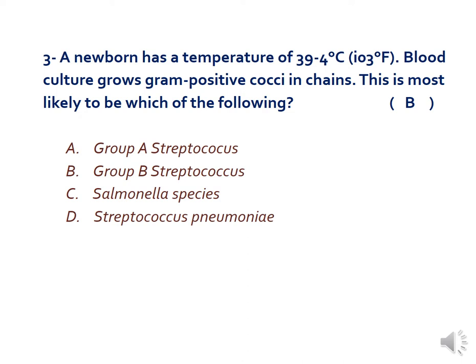A newborn has a temperature of 103 degrees Fahrenheit. Blood culture grows gram-positive cocci in chains. What could be the reason? The answer here is B — Group B Streptococcus, specifically Streptococcus agalactiae.